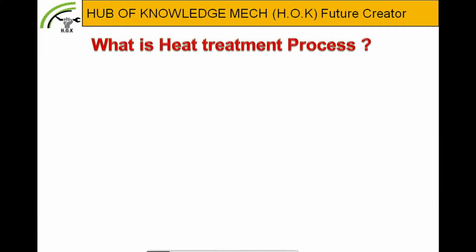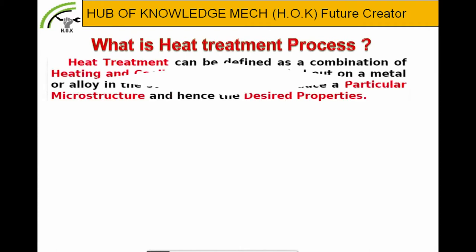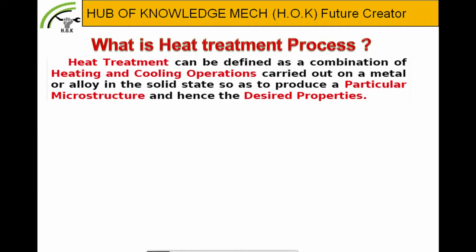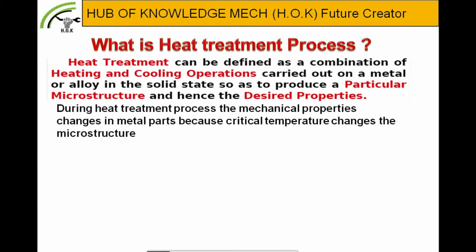Now let's understand what is heat treatment process. Heat treatment can be defined as a combination of heating and cooling operations carried out on a metal or alloy in the solid state so as to produce a particular microstructure and hence the desired properties. During heat treatment, mechanical properties change in metal parts because critical temperature changes the microstructure. If we heat steel parts above the critical temperature, its microstructure gets disturbed or changes.